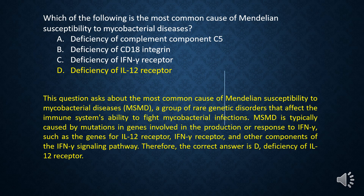This question asks about the most common cause of Mendelian susceptibility to mycobacterial diseases, MSMD, a group of rare genetic disorders that affect the immune system's ability to fight mycobacterial infections. MSMD is typically caused by mutations in genes involved in the production or response to interferon gamma, such as the genes for IL-12 receptor, interferon gamma receptor, and other components of the interferon gamma signaling pathway. Therefore, the correct answer is D, deficiency of IL-12 receptor.